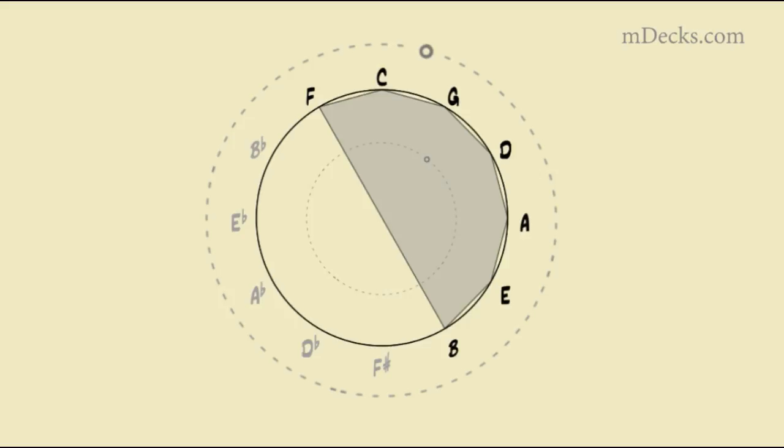So in the C major scale the notes are C, D, E, F, G, A, B. And the graph of the circle is then this half circle.